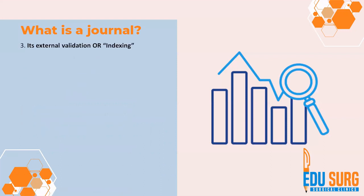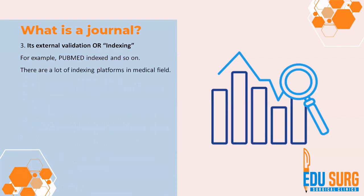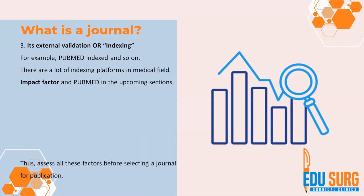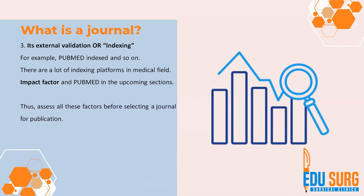Another important point is the indexing, external validation, or impact factor of the journal. Journals with PubMed indexing are considered very good journals, and other indexing platforms are also available. Select an indexed journal because impact factor and indexing are very important to authenticate a journal. These three factors — periodicity, peer review, and indexing — are very important to select a journal for publication.